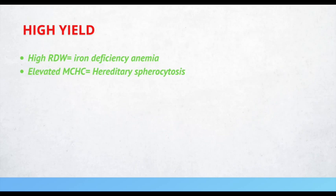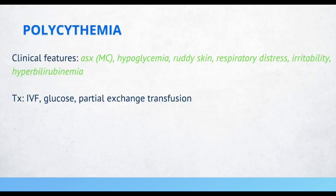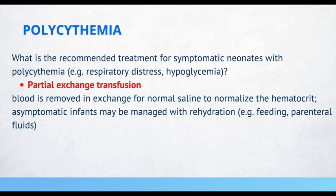Patients with polycythemia are most commonly asymptomatic, but if they do have symptoms you will see ruddy skin, respiratory distress, irritability, hyperbilirubinemia, and hypoglycemia. To treat these patients, give IV fluids, glucose, and partial exchange transfusion. The recommended treatment for symptomatic neonates with polycythemia is partial exchange transfusion — blood is removed in exchange for normal saline to normalize the hematocrit. Asymptomatic infants may be managed with rehydration.